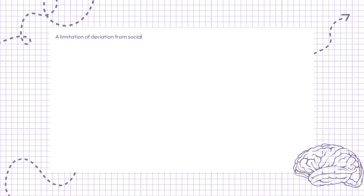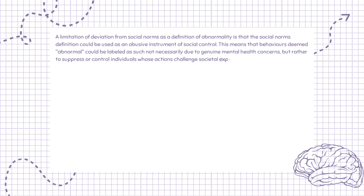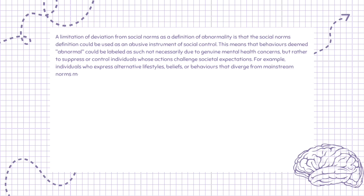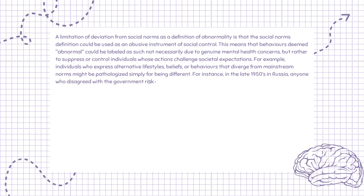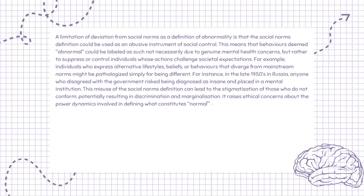A limitation of deviation from social norms as a definition of abnormality is that the social norms definition could be used as an abusive instrument of social control. Behaviors deemed abnormal could be labeled as such not necessarily due to genuine mental health concerns, but rather to suppress or control individuals whose actions challenge societal expectations. For example, in the late 1950s in Russia, anyone who disagreed with the government risked being diagnosed as insane and placed in a mental institution. This misuse can lead to stigmatization, discrimination, and marginalization of those who do not conform.